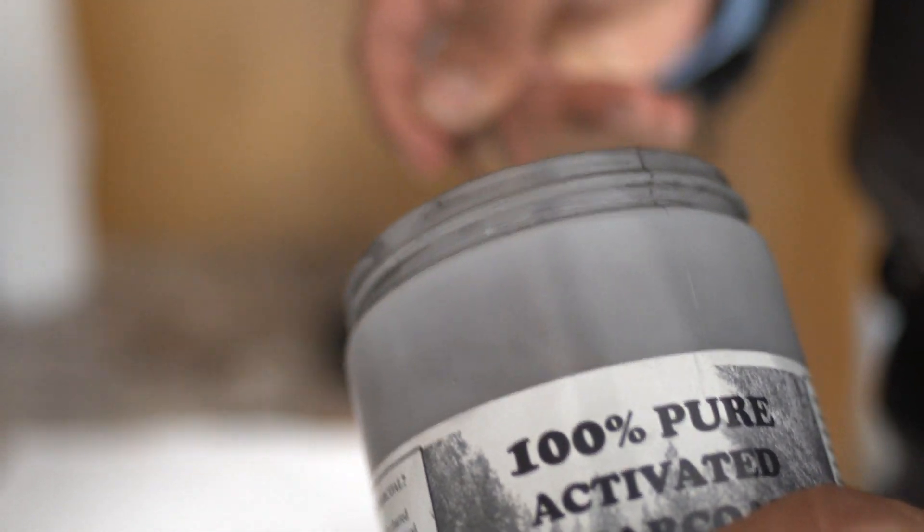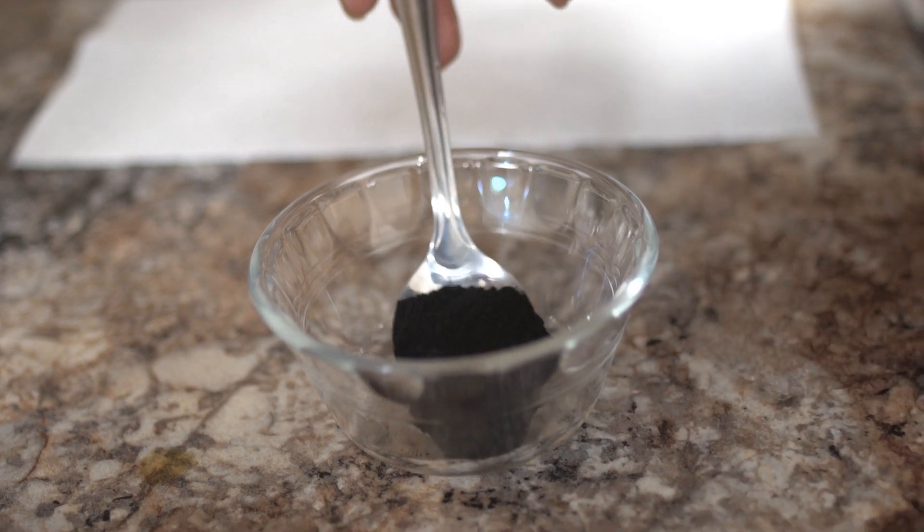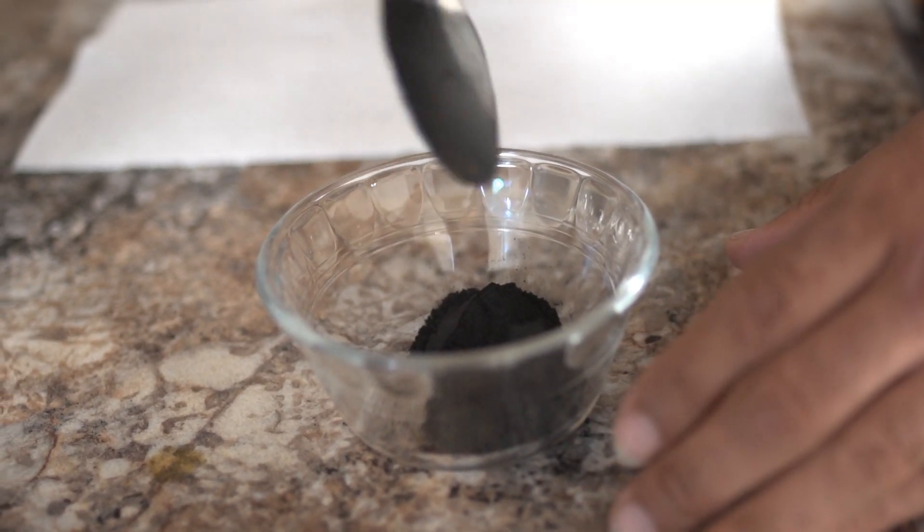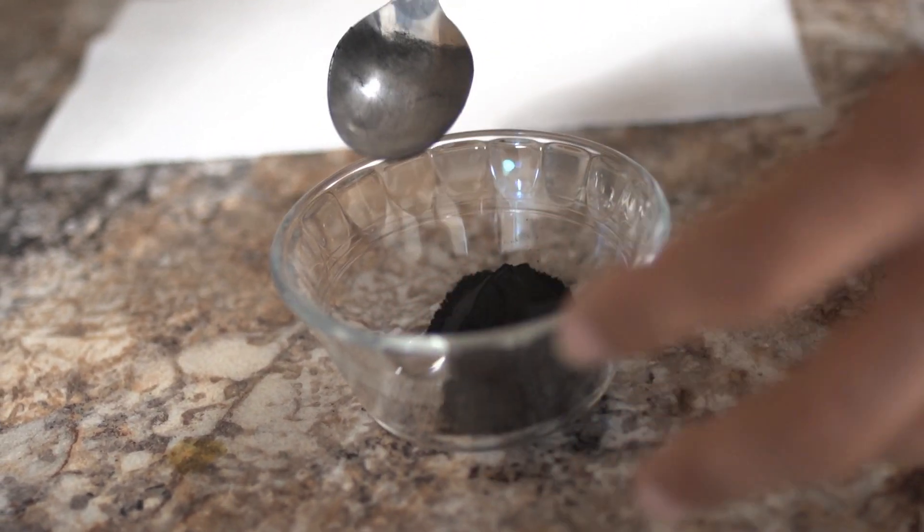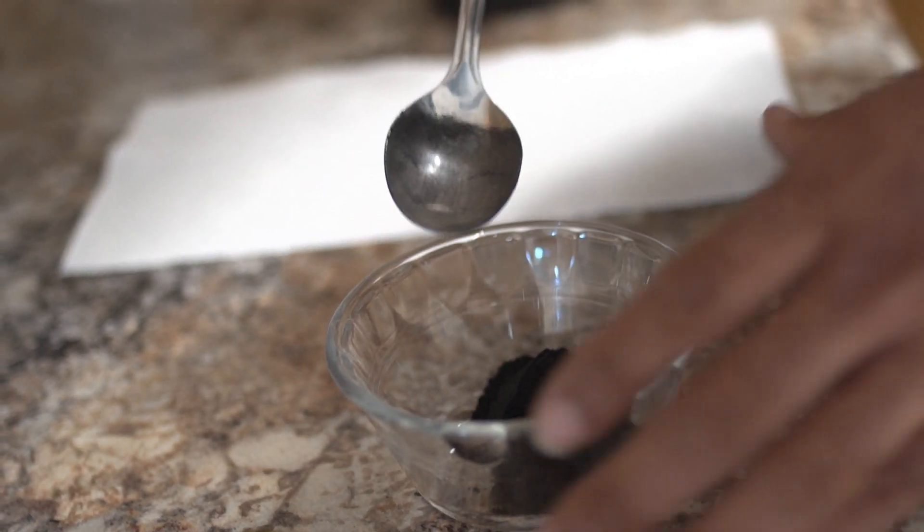You want to take about a tablespoon or two of the charcoal. Once you have it on your spoon, place the spoon in the jar and then just turn it over rather than dropping it, because this charcoal is probably the messiest herb that you can deal with and it'll get powder all over the place. It's the toughest thing to get out of your carpet.